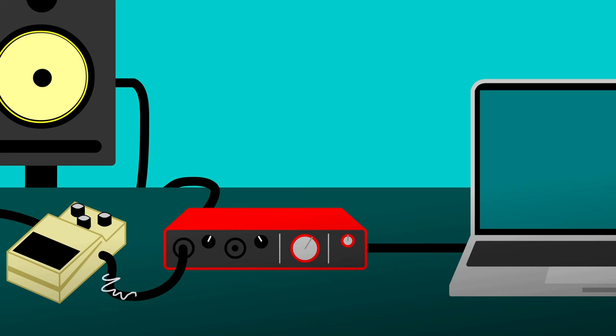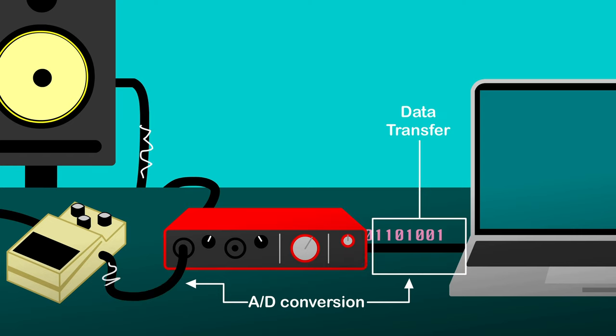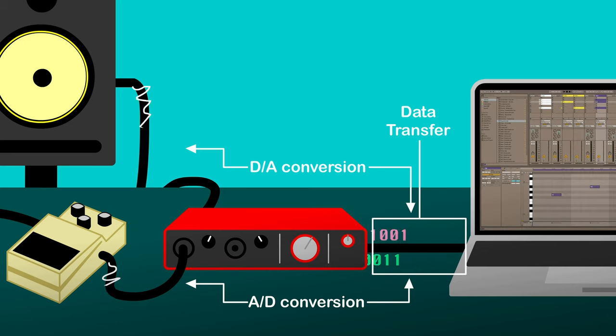Latency, or more accurately the round-trip latency, is the time it takes between the analog signal hitting the audio interface input and finally coming out of its output. That takes into consideration the time it takes for A to D conversion, transfer to and from the computer, and D to A conversion. You should also note that more latency will also be added to your system because of the time it takes for your CPU to actually process that data and apply complex effects to it.